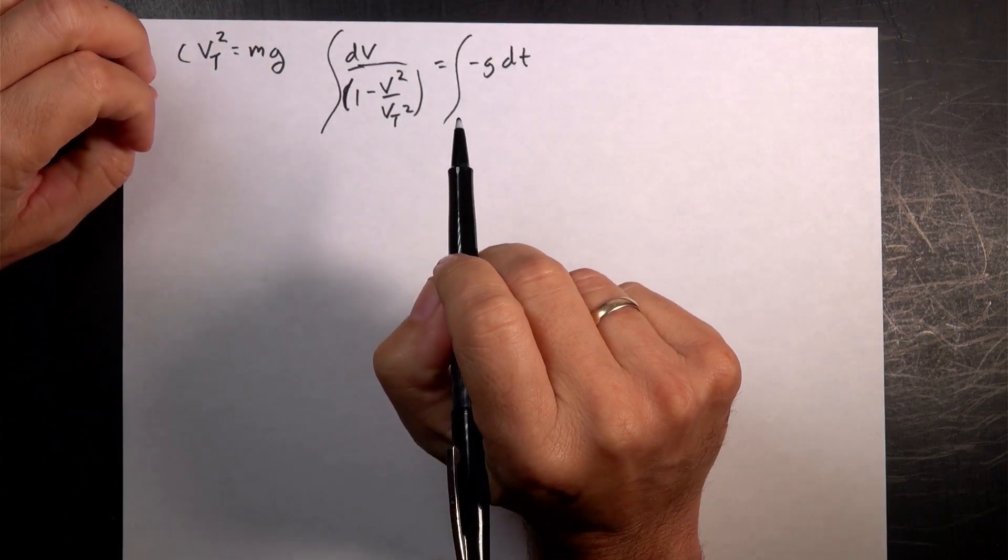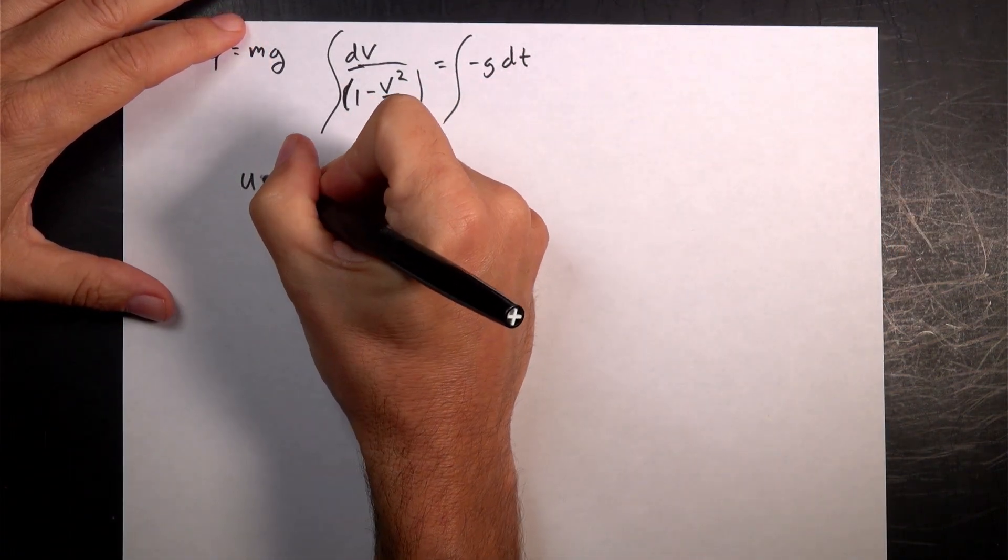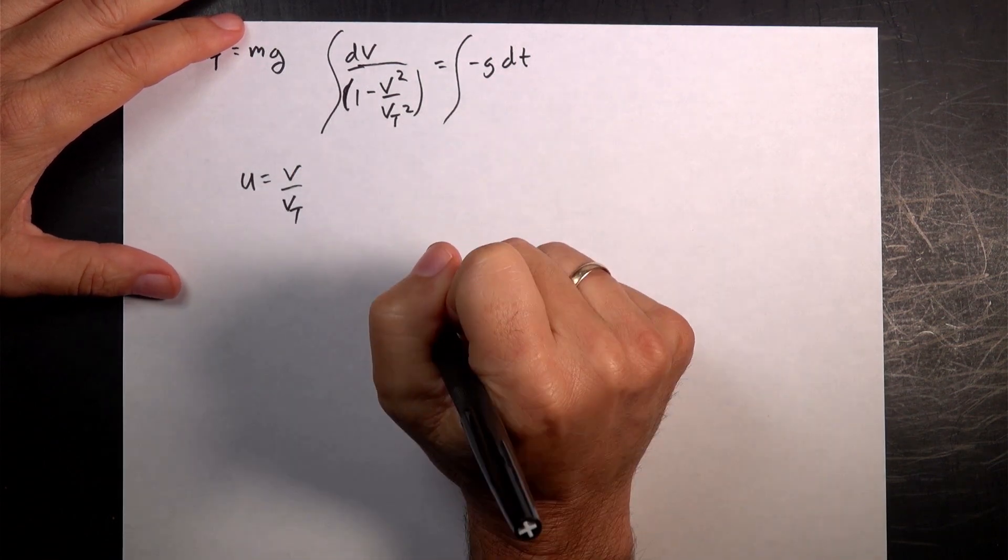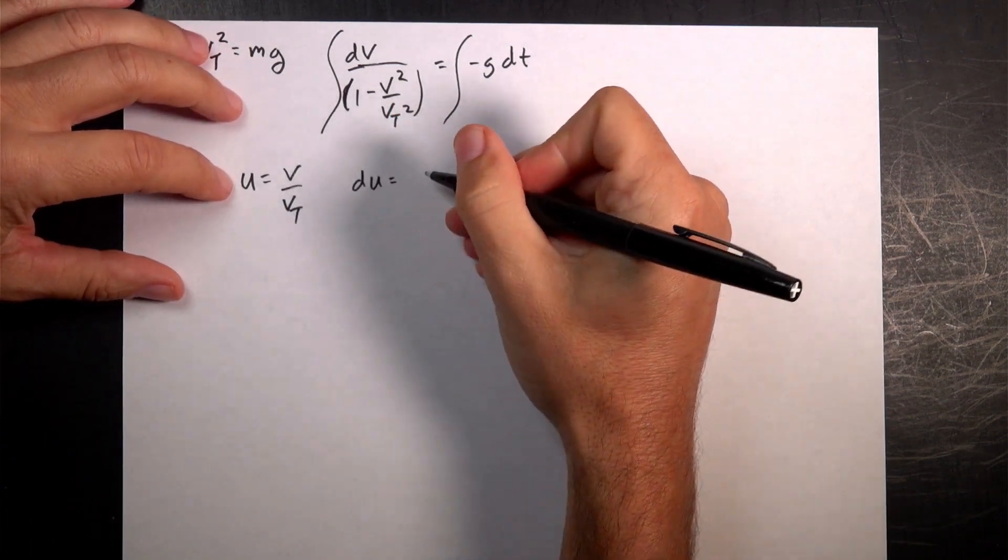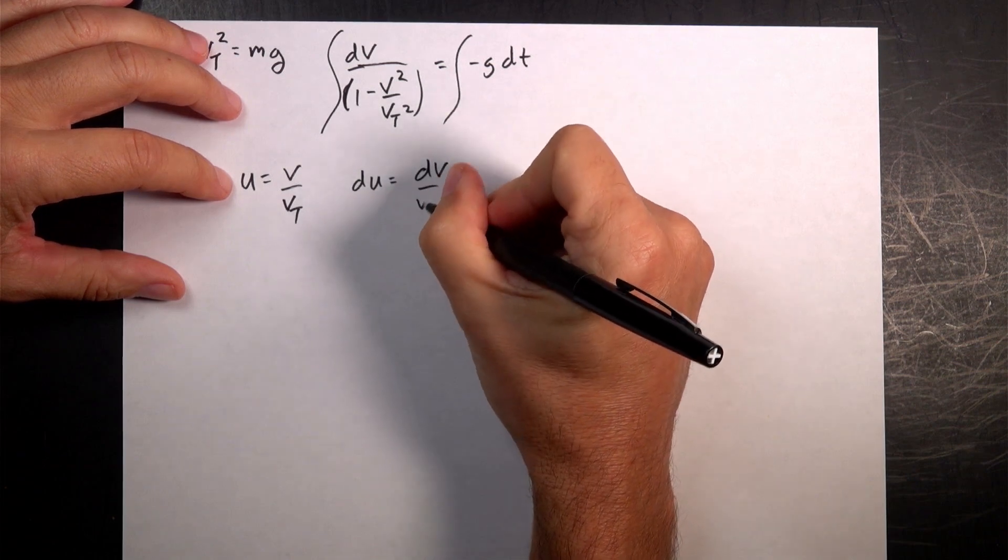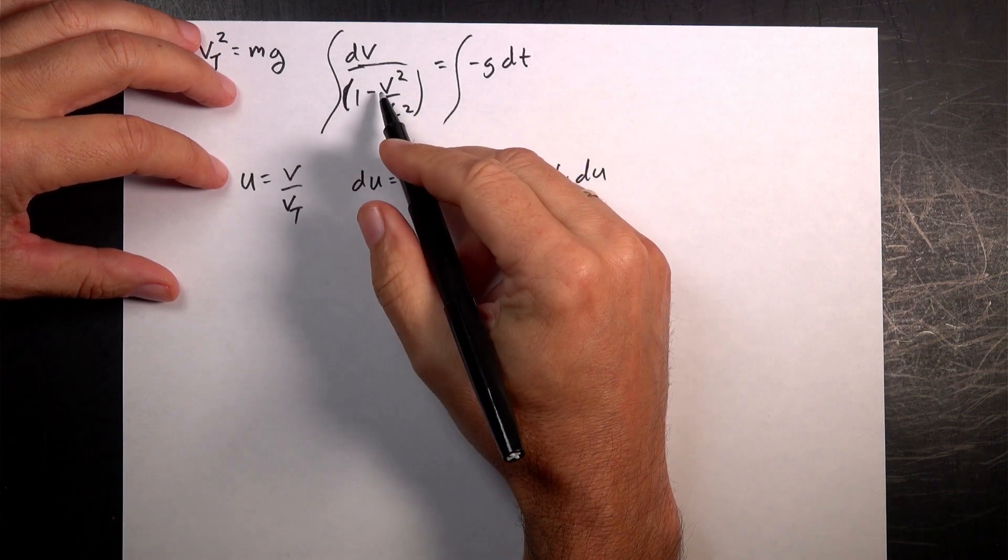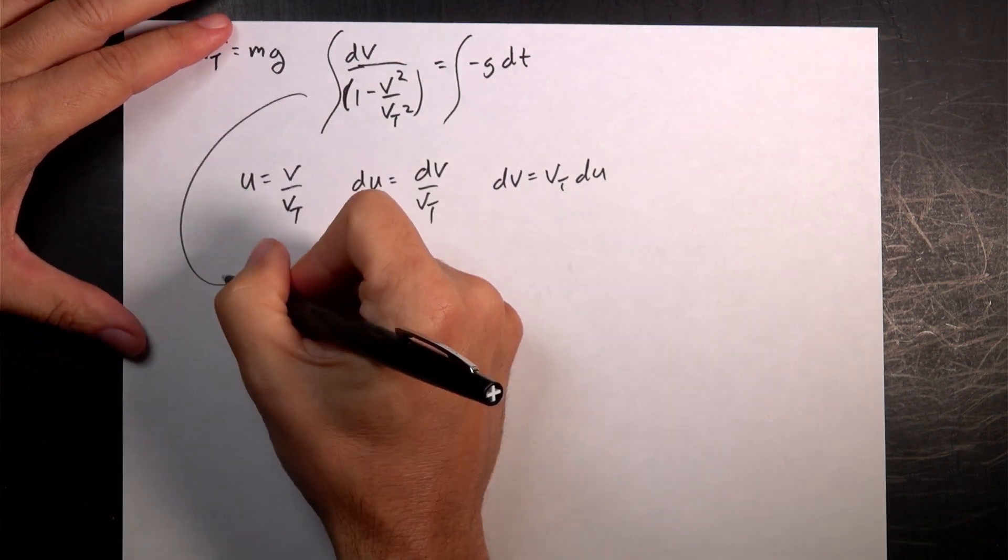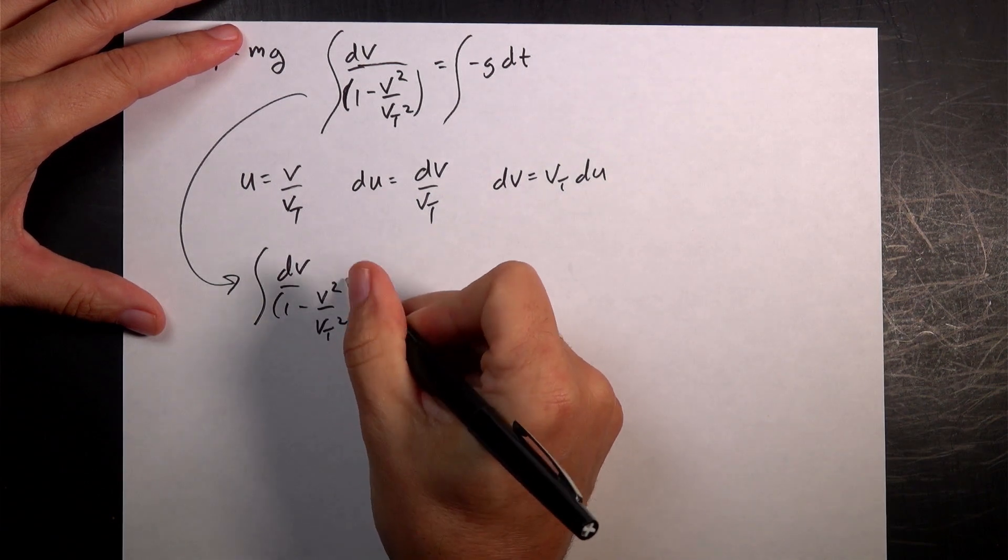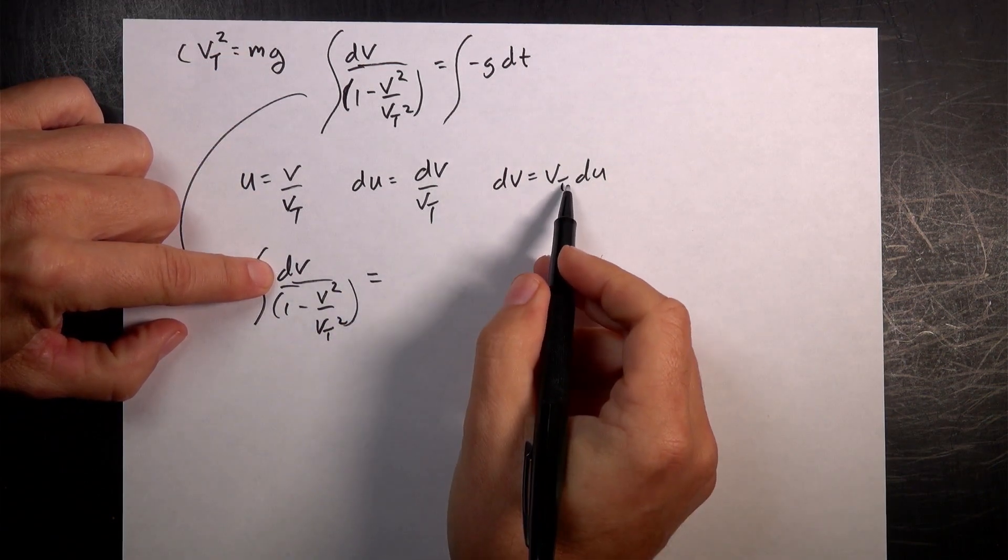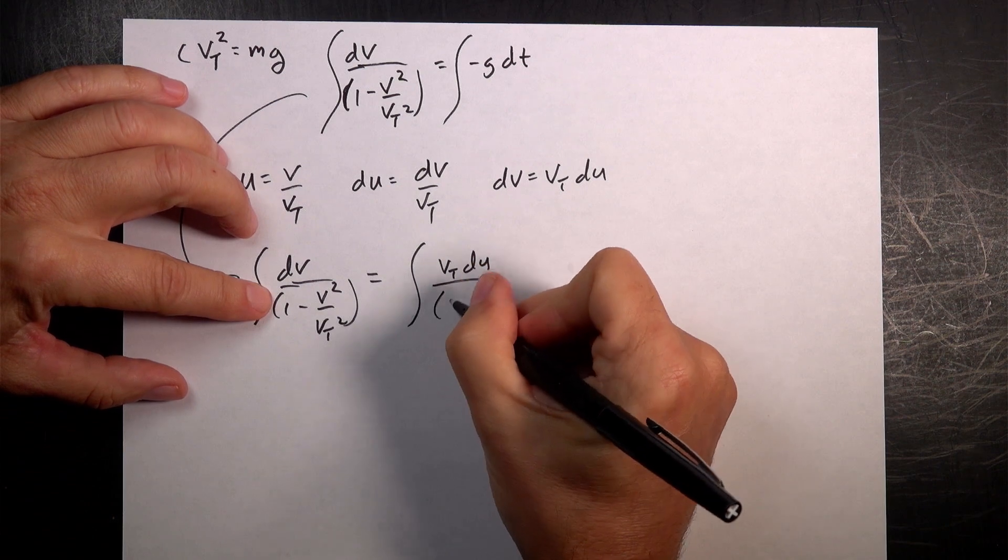Okay, so let's make a substitution. Let's say, I think this will work. U equals v over vt. So if I write that, then I can get du equals dv over vt. So dv equals vt du. And then on the bottom, I'm going to get 1 minus u squared. So this integral becomes dv over 1 minus v squared over vt squared. I'm going to put, for dv, I'm going to put vt du. So I get the integral of vt du. And then I have 1 minus u squared.